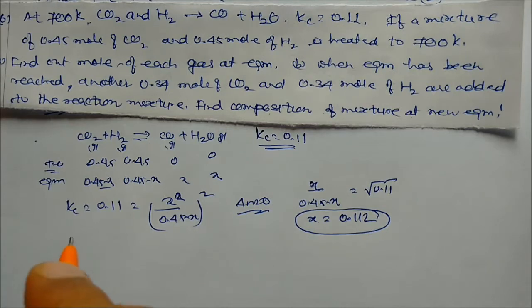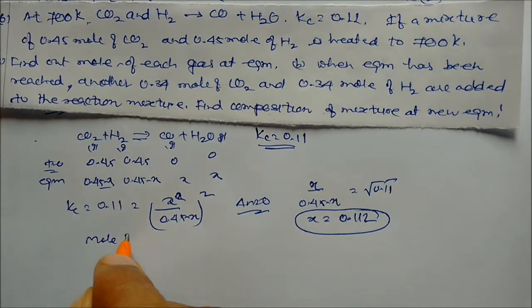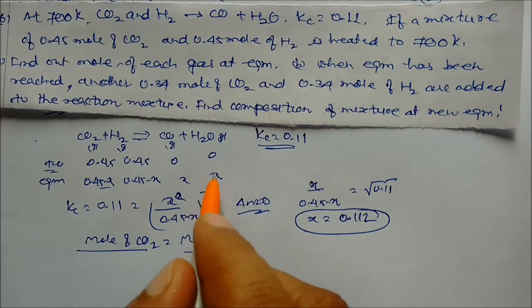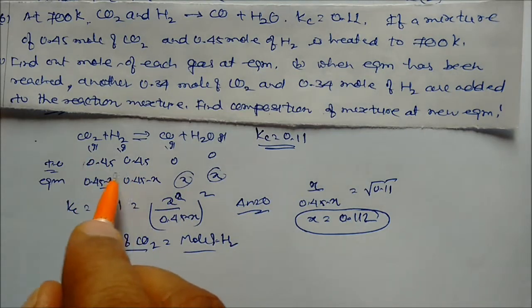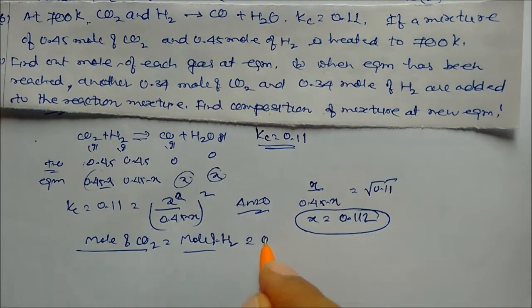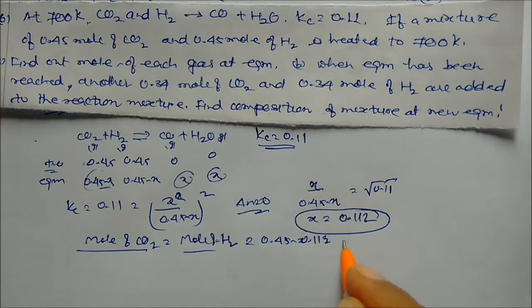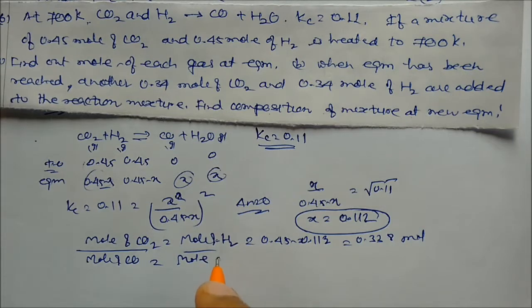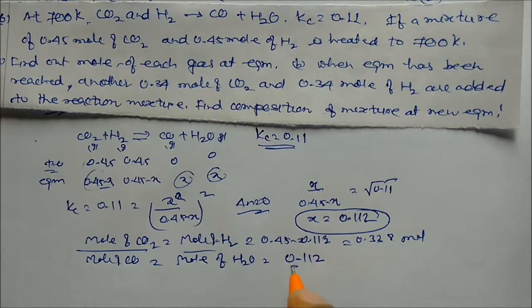Moles of CO₂ = moles of H₂ = 0.45 − 0.112 = 0.338 mol. Moles of CO = moles of H₂O = 0.112 mol.